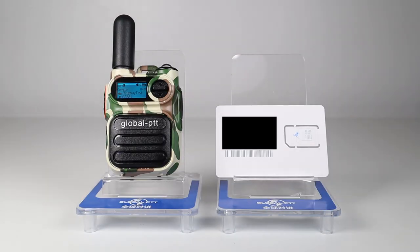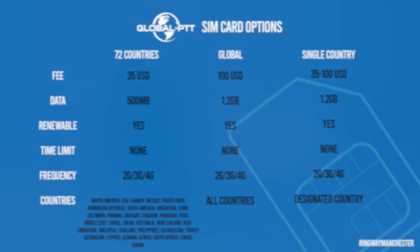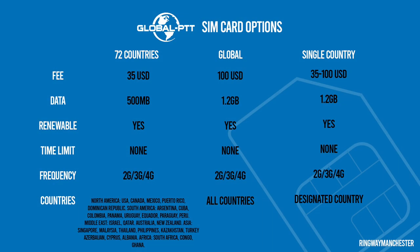The first question is: do you need a SIM card? The answer is yes. These devices don't run off Wi-Fi networks and require a SIM card. The SIM cards GlobalPTT offer are 72-country cards, global cards, a China and Hong Kong card, and a single country card. They're also compatible with other cards — for example, I have a device running on a 3Data SIM which I pay £9 a month for and get 25GB of data.